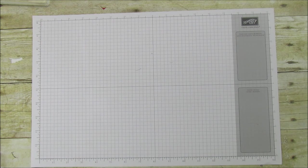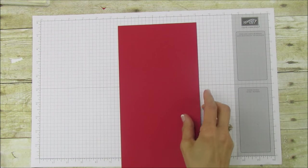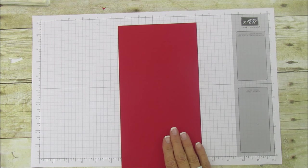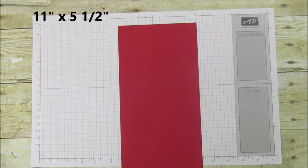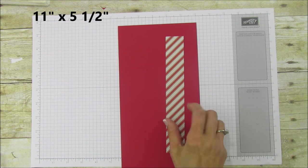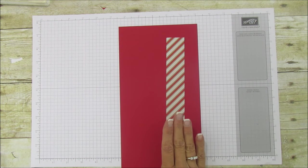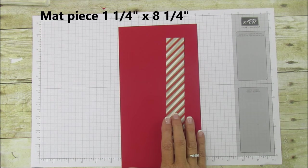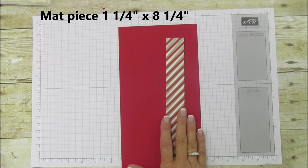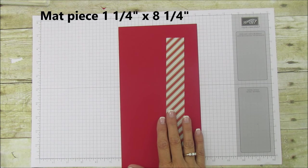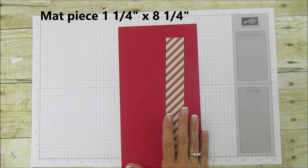For this one you are going to need a piece of real red and this is 11 by 5 and a half. To mat it we're going to mat it with our new holiday candy cane lane designer series paper. This is beautiful, I love this paper.